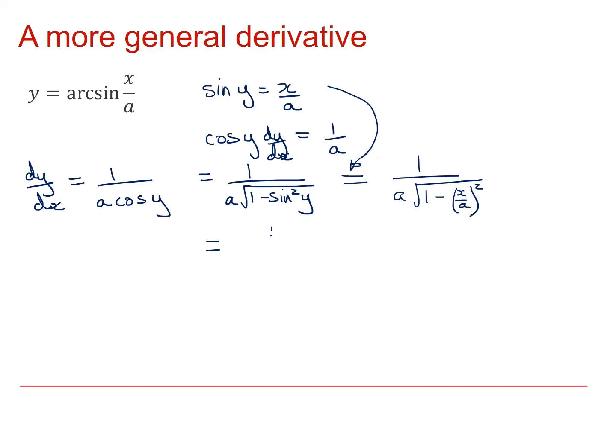A little bit of tidying up to do with that. So I'm going to get one over a times the square root of a squared minus x squared all over a squared. I can actually do a bit of cancelling down at the bottom here. This a squared as it comes out through the square root will just become an a, which will cancel off with that a there.